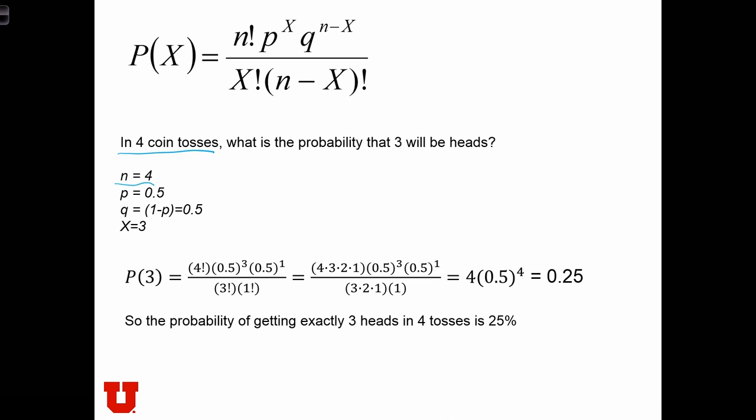The probability of getting a heads on any of the experiments is 50%, and the probability of the complement, q, is also 50%. In this case, we're looking for the probability of obtaining three heads, so X equals 3. All that remains is to plug everything into the equation.